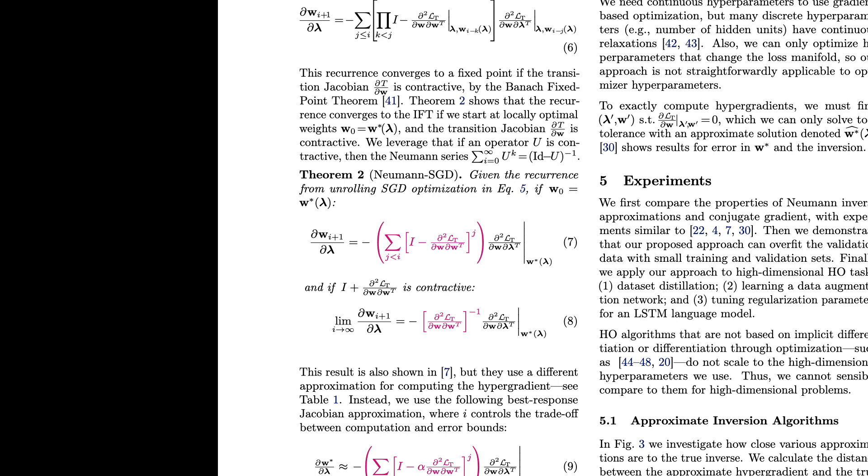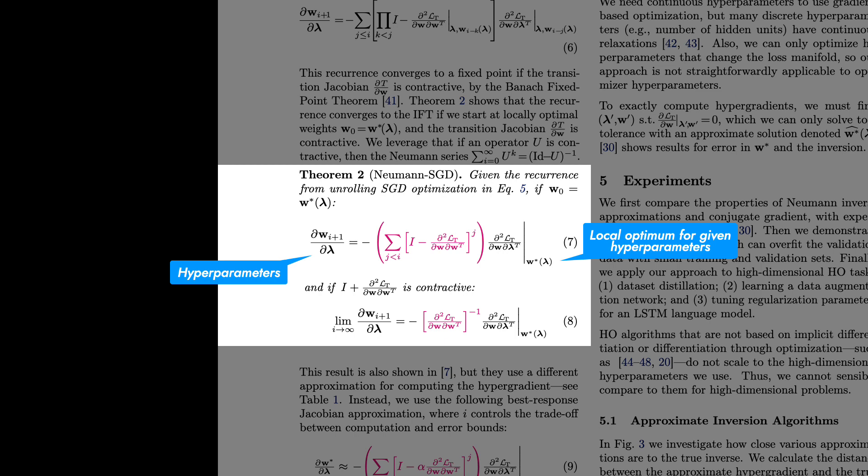This is page 5 in the paper to locate theorem 2: Neumann SGD for hyperparameter optimization. Here, lambda is the set of hyperparameters and w star denotes the local optimum for given hyperparameter lambda. If we unroll the SGD optimization from the start to i plus 1 steps, the gradient of w with respect to lambda is expressed as in equation 7.